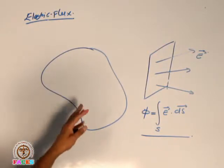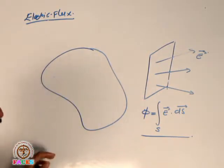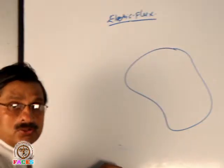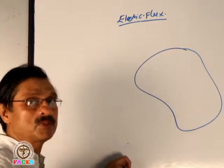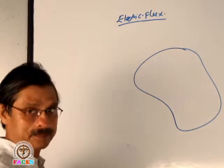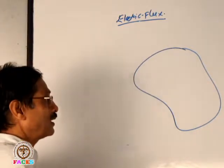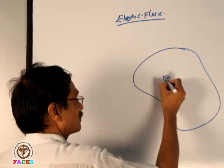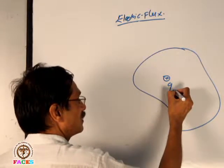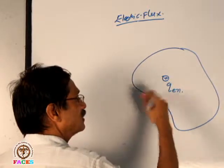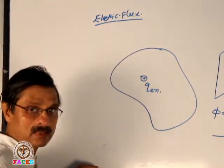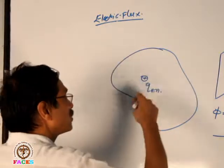This closed surface flux — how much will it be? That is Gauss's theorem. If the surface has a charge of plus or minus inside it, the total charge enclosed is what we consider. This is the formula.